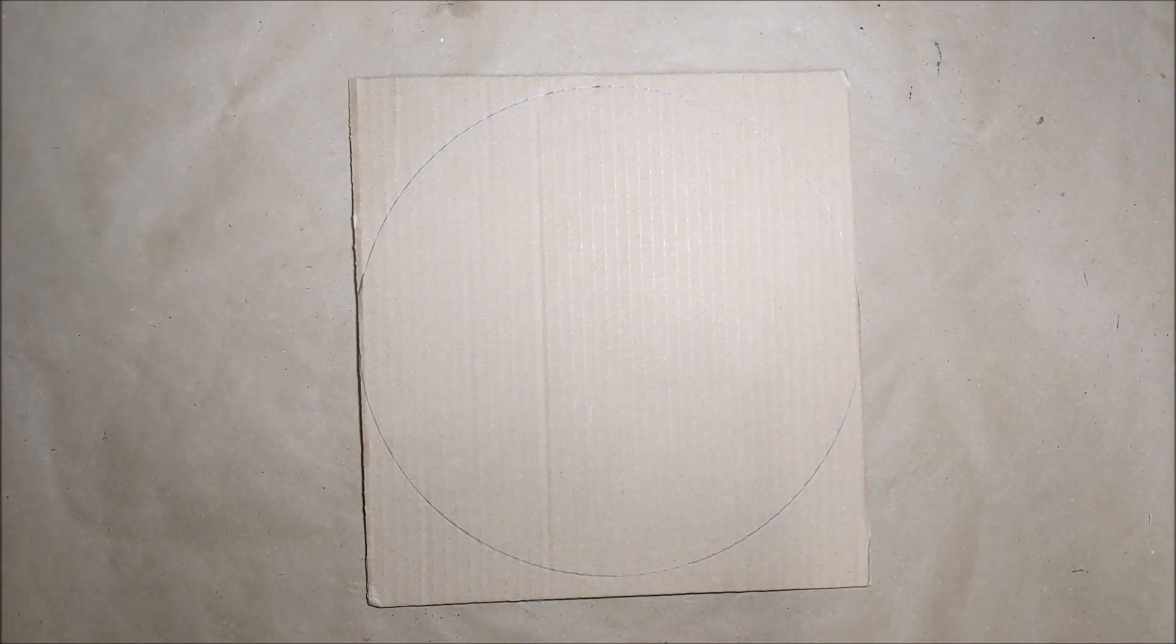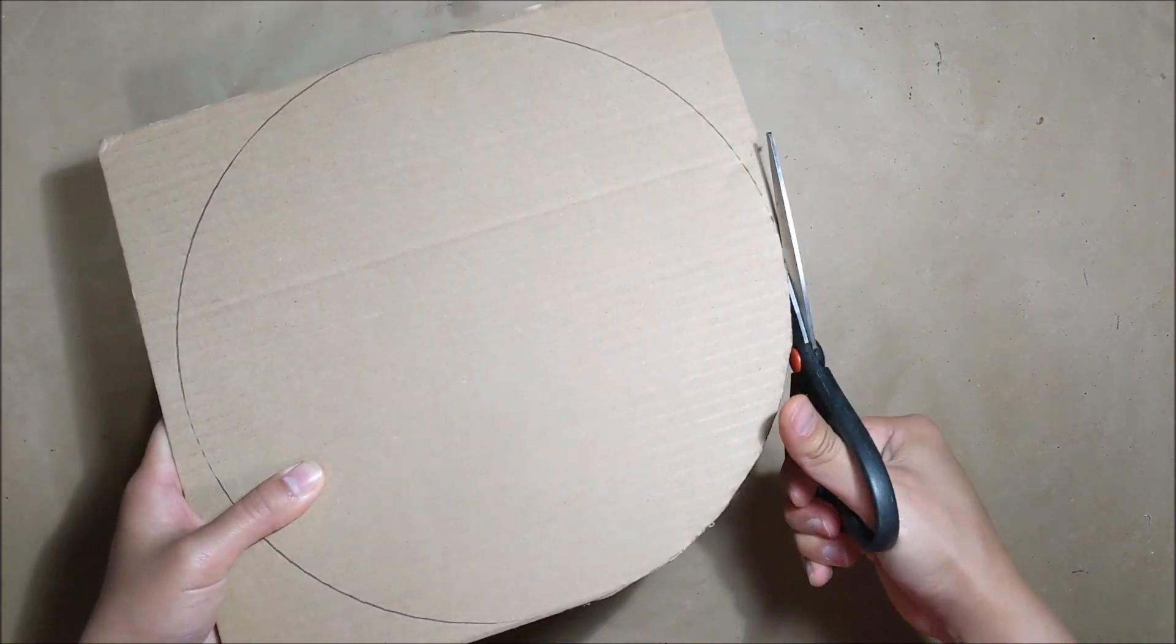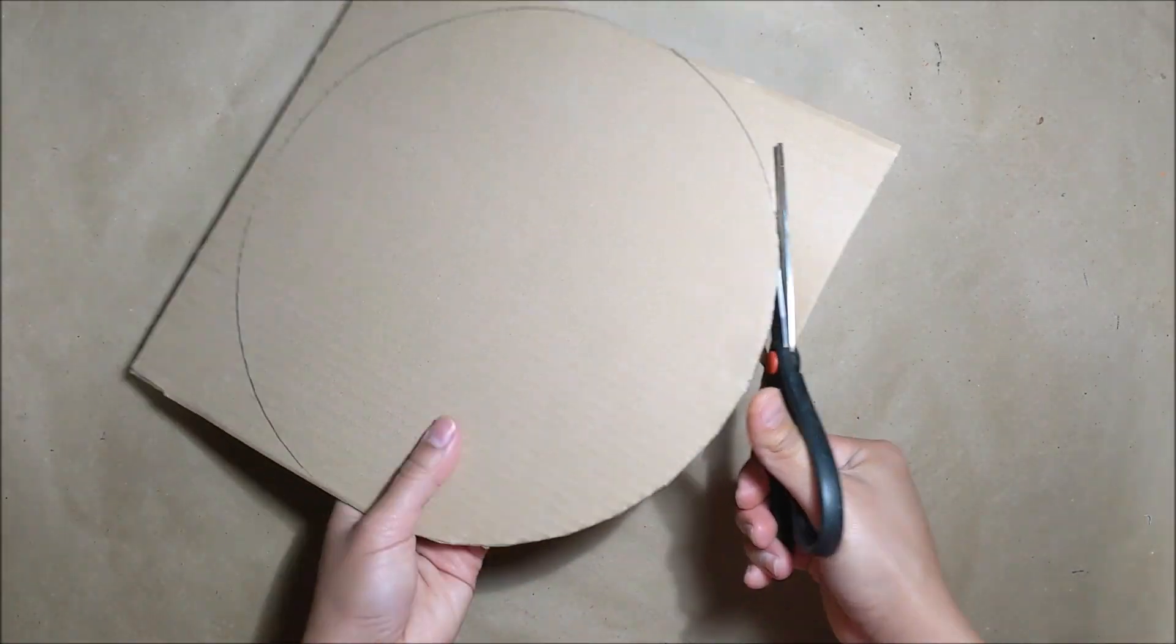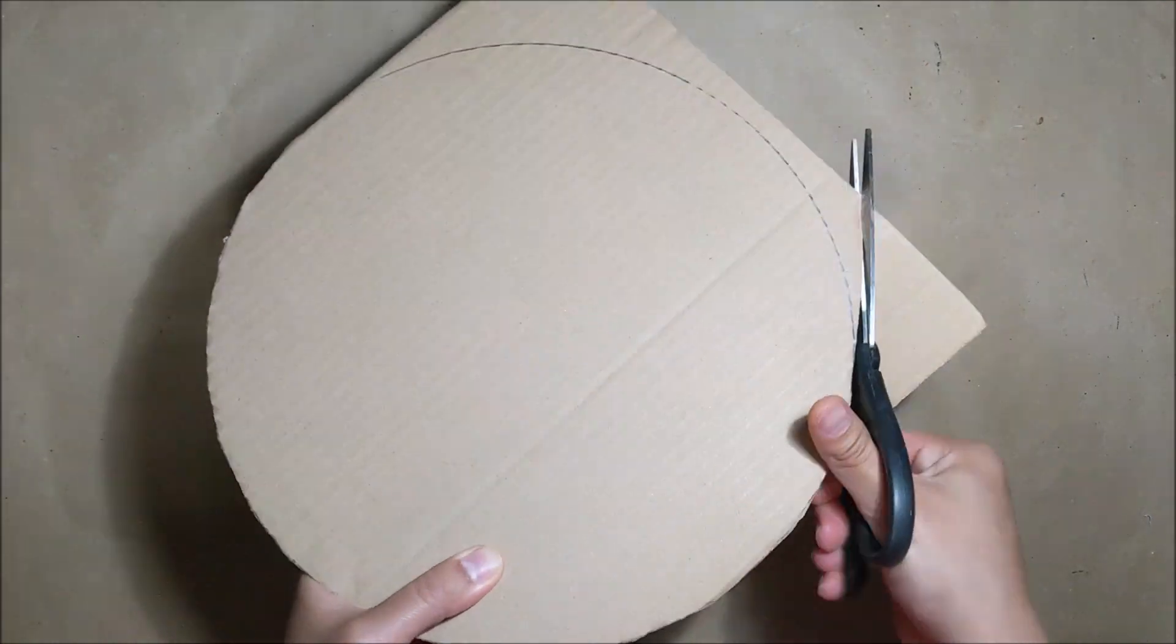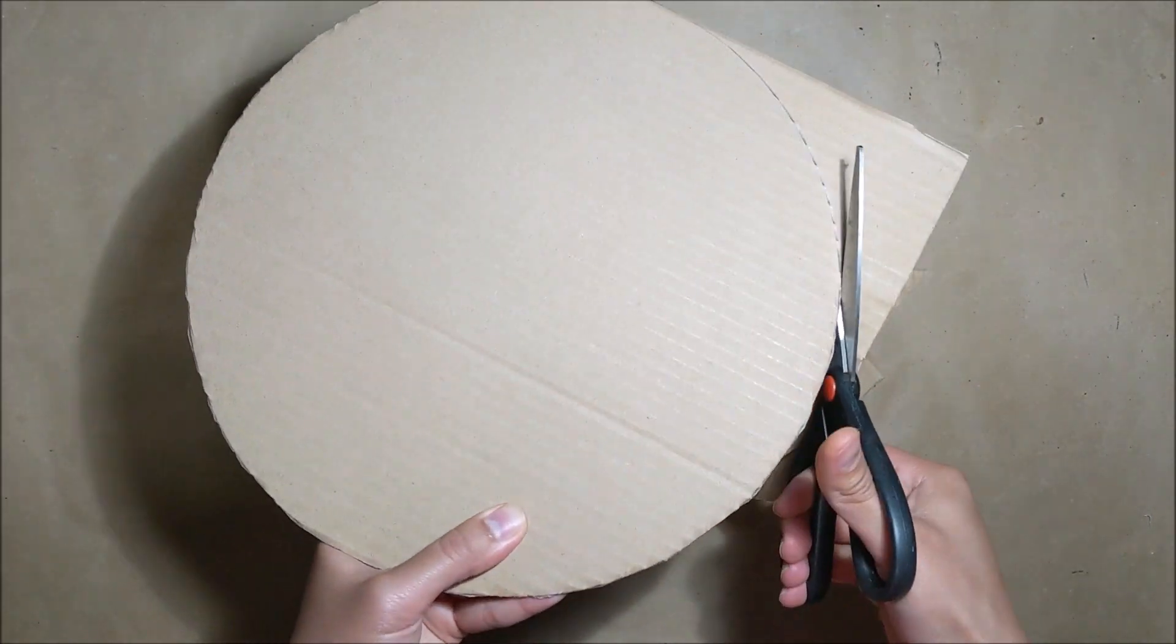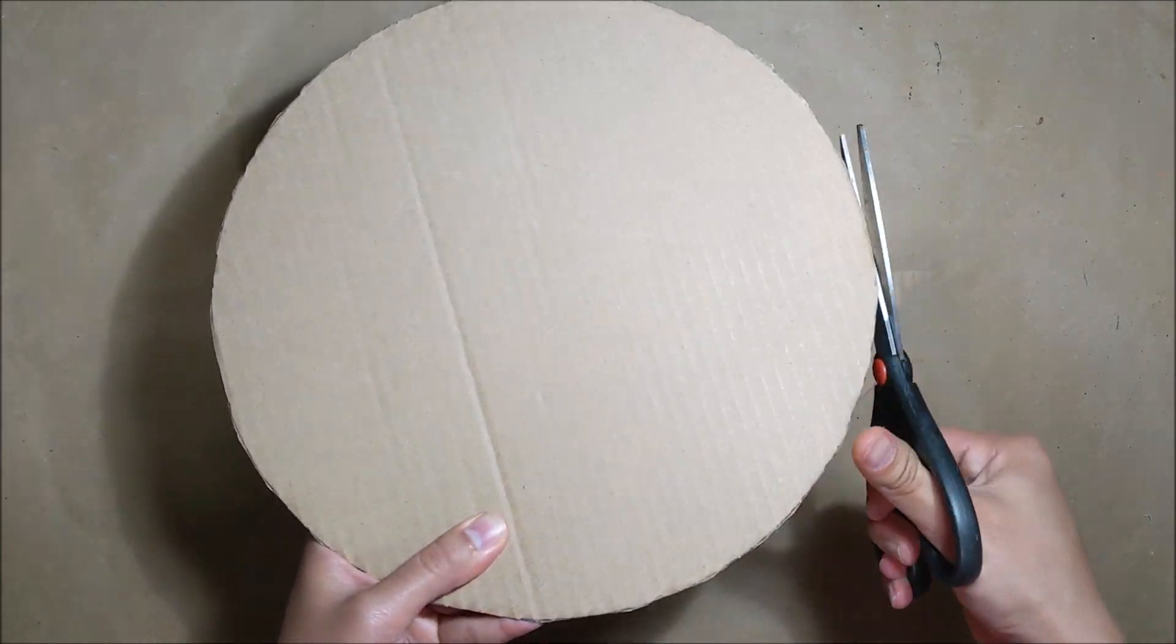Afterwards you just need to cut this piece of circle out. Cardboard is a lot tougher than paper so you will be using a lot more power when using your scissors. So just be careful not to create so many creases or bends in your cardboard.